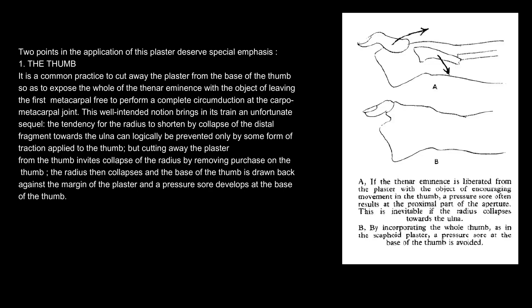Two points in the application of this plaster deserve special emphasis. One, the thumb. It is a common practice to cut away the plaster from the base of the thumb so as to expose the whole of the thenar eminence with the object of leaving the first metacarpal free to perform a complete circumduction at the carpometacarpal joint.